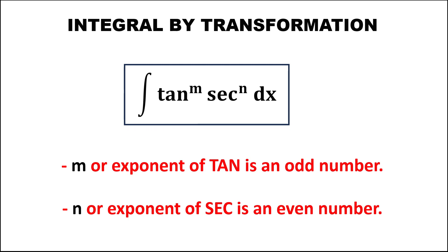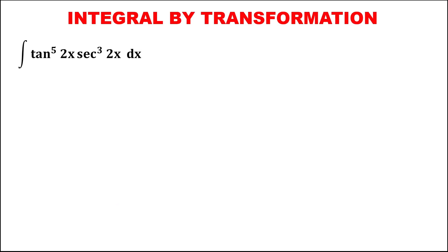Let's have this problem. For this integral by transformation for tangent and secant, we have two conditions: for m, or the exponent of tangent, is an odd number, and for n, or the exponent of secant, is an even number. For this given, we find the integral of tangent to the power 5, 2x, secant to the power 3, 2x, dx.